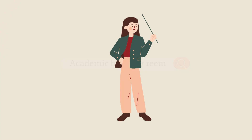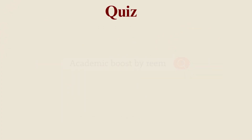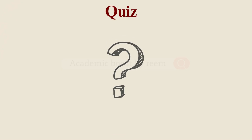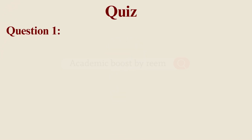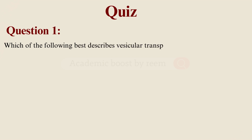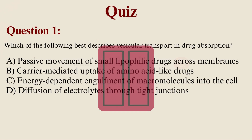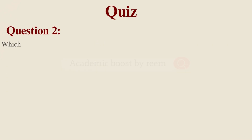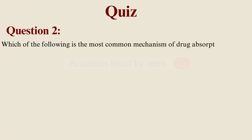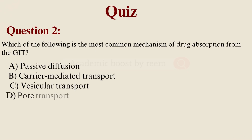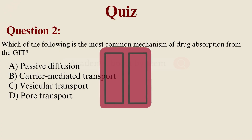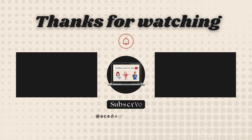Now that we've covered the five mechanisms, let's see how much actually clicked. Here is a quick quiz to test your understanding. Question one: Which of the following best describes vesicular transport in drug absorption? A, B, C, or D? Question two: Which of the following is the most common mechanism of drug absorption from the GI tract? A, B, C, or D? If you learned something cool today, smash that like button and hit subscribe for more bite-sized medical lessons. Drop your answers and questions in the comments. Until next time, stay curious.